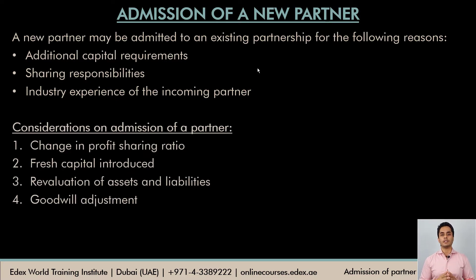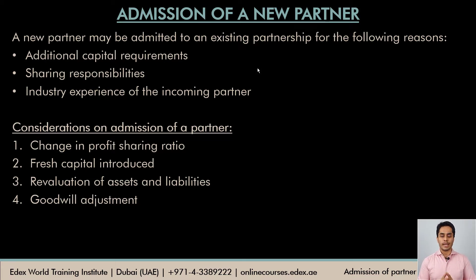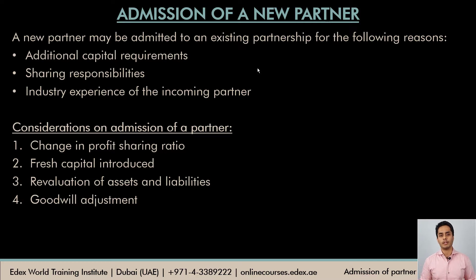At the time of admission of a new partner, certain adjustment entries from an accounting point of view have to be kept in mind. First, there will be a change in the profit sharing ratio — existing partners share profits in a certain ratio, but when the new partner comes in, the new profit sharing ratio takes effect and the old one will no longer be used. Then fresh capital introduced by the new partner will require an entry. The revaluation of assets and liabilities has to be done, and the profit or loss on revaluation will be adjusted in the old partners' capital accounts. Finally, a goodwill adjustment entry has to be made.